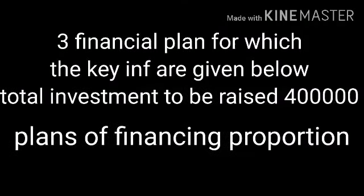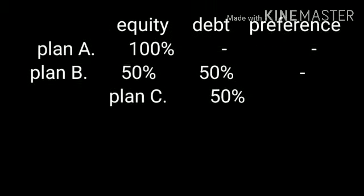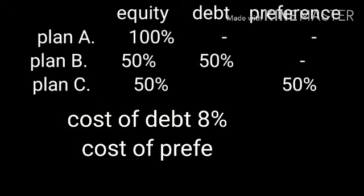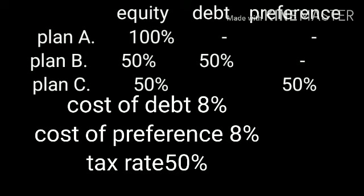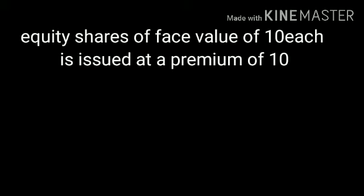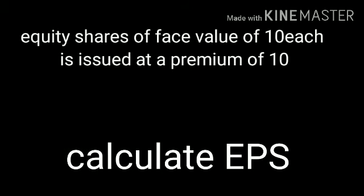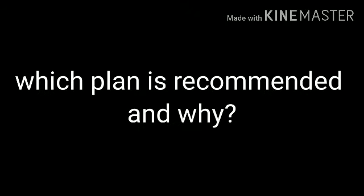XYZ Limited is considering three financial plans. The total investment to be raised is rupees 4 lakh. Plan A: equity 100%. Plan B: equity 50%, debt 50%, preference shares nil. Plan C: equity 50%, preference shares 50%. Cost of debt is 8%, cost of preference is 8%, tax rate is 50%. Equity shares of face value rupees 10 each will be issued at a premium of rupees 10 per share. Expected EBIT is 1 lakh 60,000. Calculate earning per share and recommend which of the three financial plans is best and why.